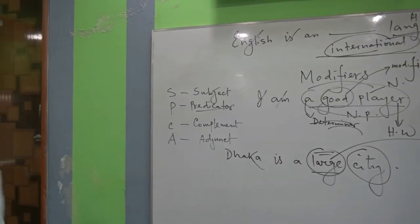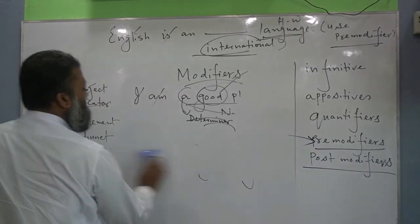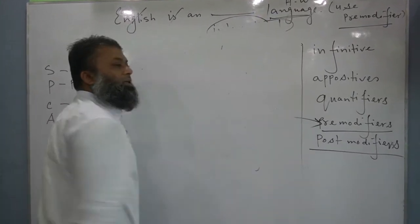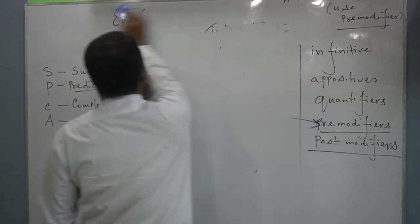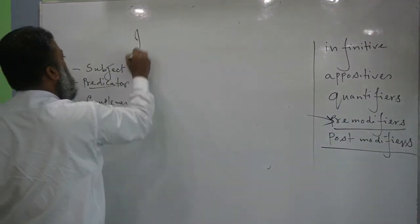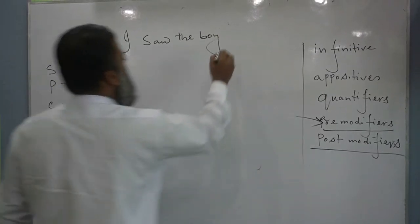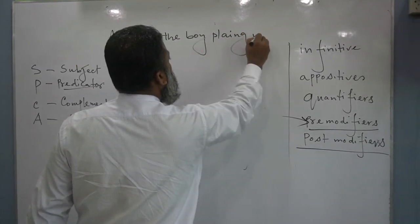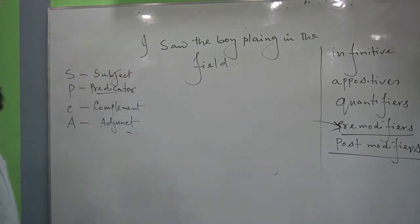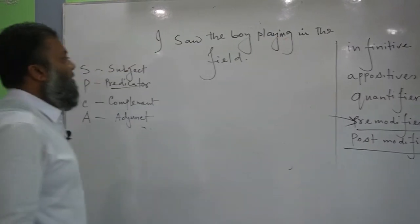Probably you have understood what I have already said. Now I am going to discuss post-modifier. What is post-modifier? Post means after, and pre means before. Consider: 'I saw the boy playing in the field.' Here 'I' is the subject, 'saw' is the finite verb, 'the boy' is the object, and 'playing in the field' is the phrase added after the head word.